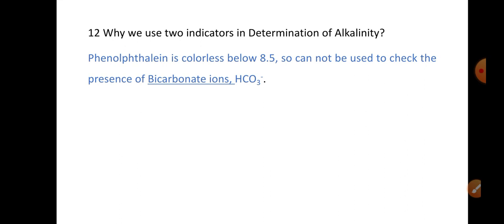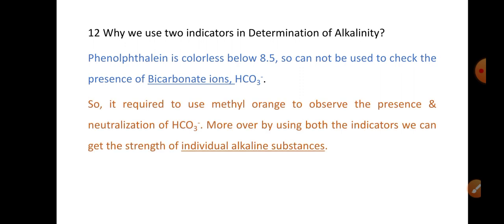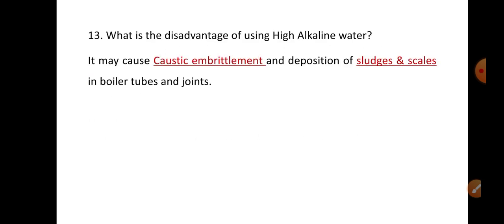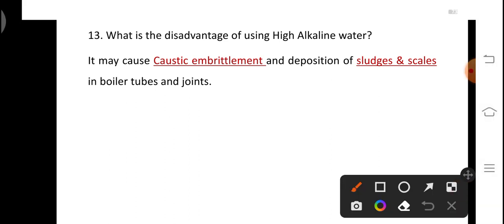Why do we use two indicators in the determination of alkalinity? This is because phenolphthalein is colorless below pH 8.5, so it cannot detect the presence of bicarbonate ions; methyl orange is required to observe the neutralization of bicarbonate. Using both indicators allows us to determine the strength of individual alkaline substances. What is the disadvantage of using highly alkaline water? It may cause caustic embrittlement and deposition of sludges and scale in boiler tubes and joints. It is therefore important to check the alkalinity of any water sample before feeding it into a boiler.